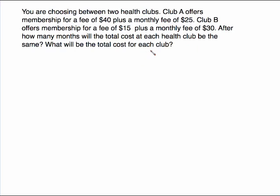This problem says you're choosing between two health clubs. Club A offers a membership fee of $40 plus a monthly fee of $25 per month. Club B offers a membership fee of $15 plus a monthly fee of $30 per month. After how many months will the total cost at each health club be the same? The two things we're looking at are Club A and Club B. This is a little different — it's not like the last two where one is x and we write an expression for the other.